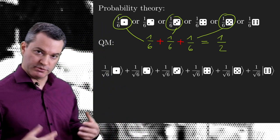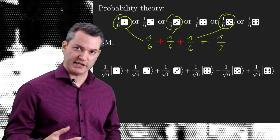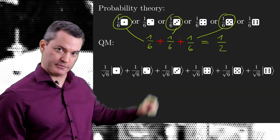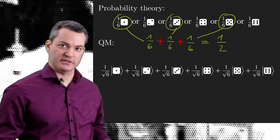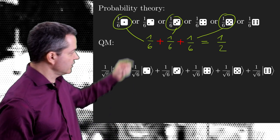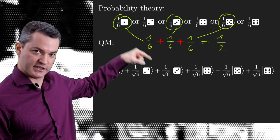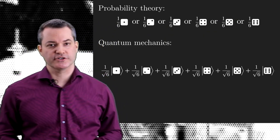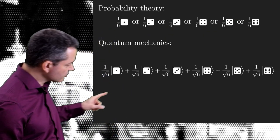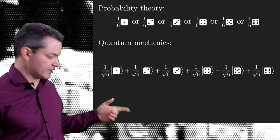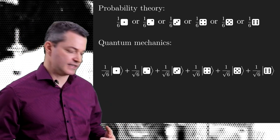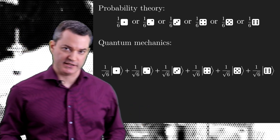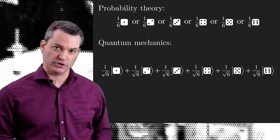For example, if we want to know the probability of rolling an odd number — namely a 1 or a 3 or a 5 — we need to add the probabilities corresponding to those numbers: 1 sixth plus 1 sixth plus 1 sixth is a half. It is crucial to note, however, that in the quantum mechanical formula we are not adding probabilities — we are adding state vectors weighted by amplitudes. We will later discuss the consequences of this important difference.